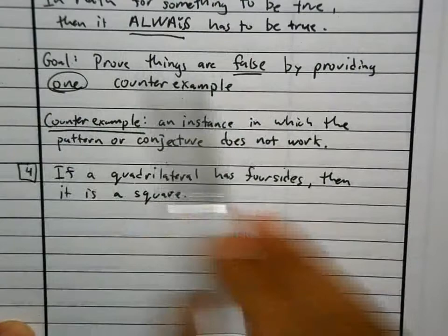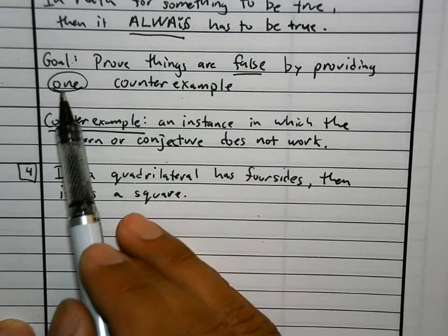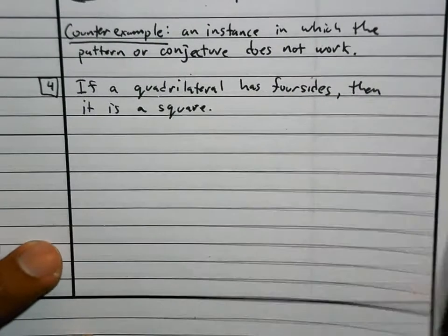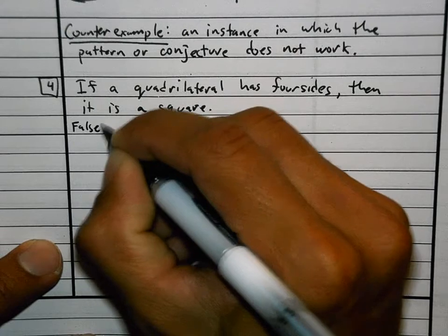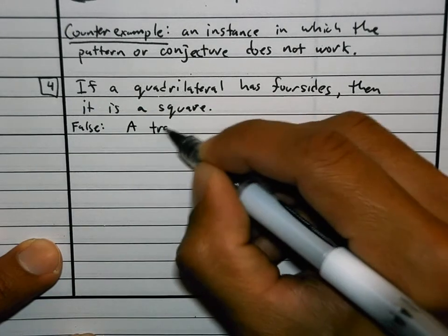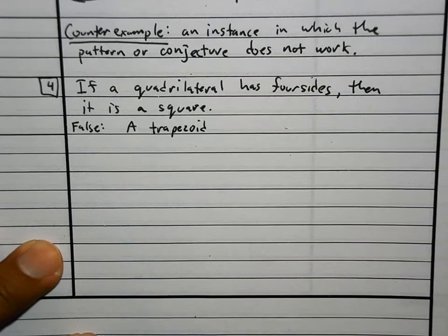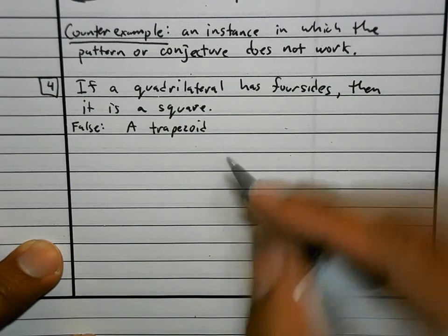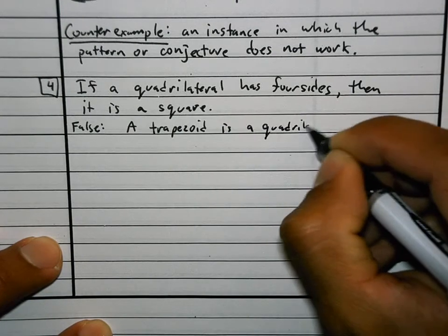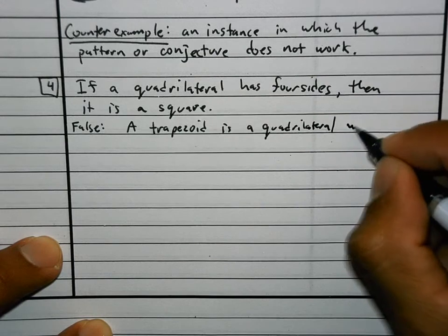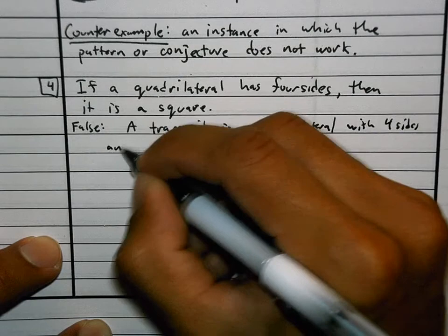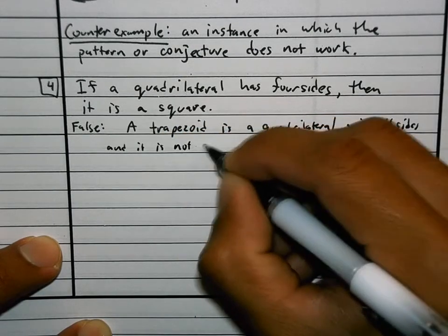All we have to do is prove things are false by providing one counterexample. So all I have to do is false. A trapezoid. Whatever you want to use. You could say rectangle. You could say a trapezoid is a quadrilateral with 4 sides and it is not a square.